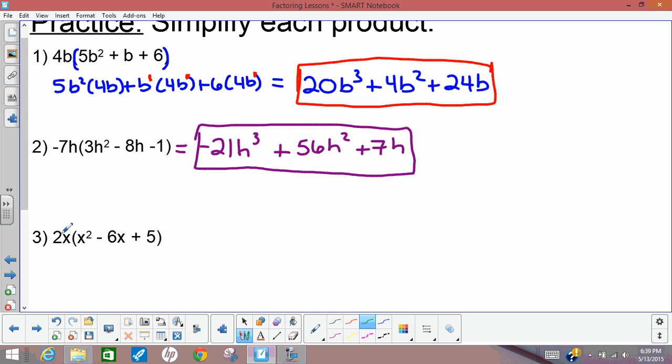Here, everything gets multiplied by 2x. So 2x times x squared gives us 2x to the third, 2x times negative 6 gives us negative 12x squared, and 2x times 5 gives us 10x.